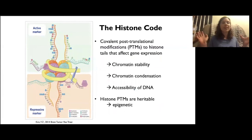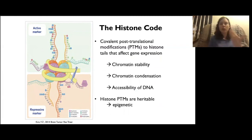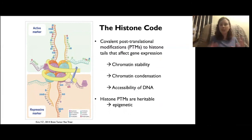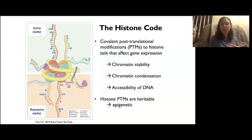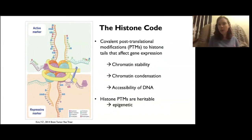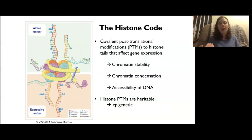This last slide is a nice summary of the histone code and how post-translational modifications affect chromatin stability, condensation, and accessibility of DNA to transcription machinery. These marks are actually heritable — they can be passed on through generations — and this is why we have the name epigenetics. 'Epi' meaning above, like we learned from epistasis. So epigenetics is an additional layer above genetics that affects which genes are expressed and to what degree.